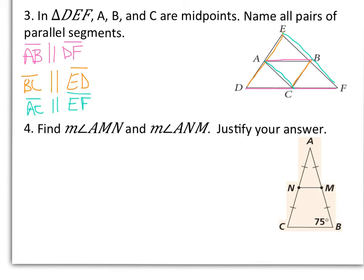Number 4 says find the measure of angle AMN and the measure of angle ANM. Justify your answer. So those two angles are in our smaller triangle, triangle AMN. And if you notice, we have an isosceles triangle, so that tells me these two angles will be congruent because my sides are congruent. Then if I look at triangle ABC, I also notice I have an isosceles triangle. So if angle B is 75 degrees, angle C is 75 degrees. So to find angle A, I can take 180 minus 75 and then minus 75. So I'm taking the total my angles will add up to and subtracting the two I know. So angle A is 30 degrees.